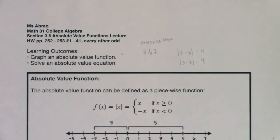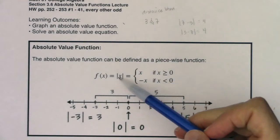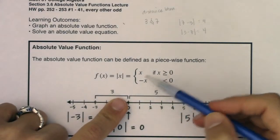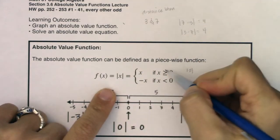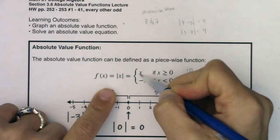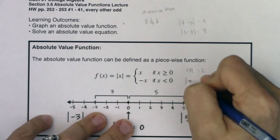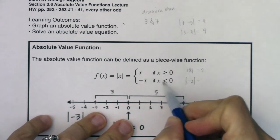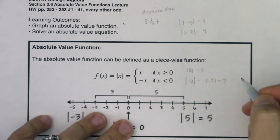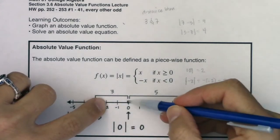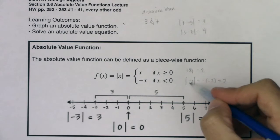Let's look at the absolute value defined as a piecewise function — we've seen this before. The absolute value function has a top piece and a bottom piece. For example, the absolute value of two: two is greater than or equal to zero, so I'm on the top piece, which outputs two — and we know the absolute value of two is two. For the absolute value of negative two: negative two is less than zero, so I'm on the bottom piece, which outputs the negative of negative two, which is positive two — because two and negative two are both two units from zero.